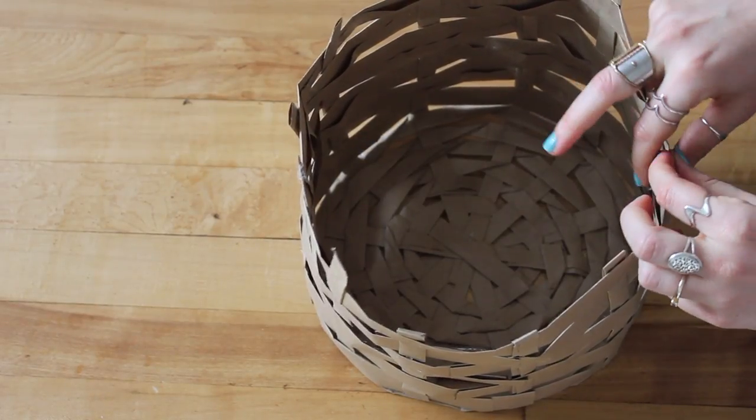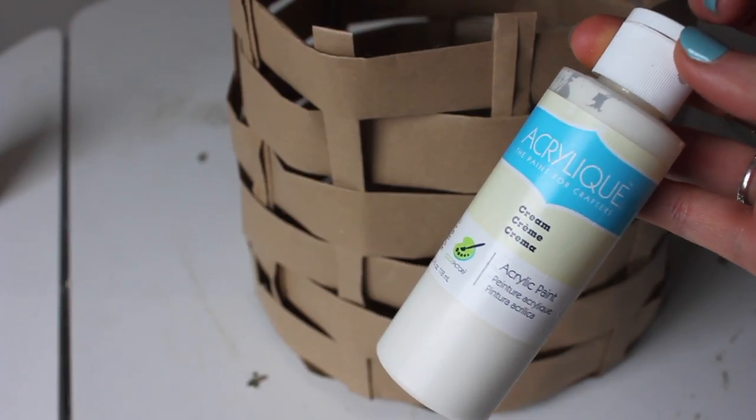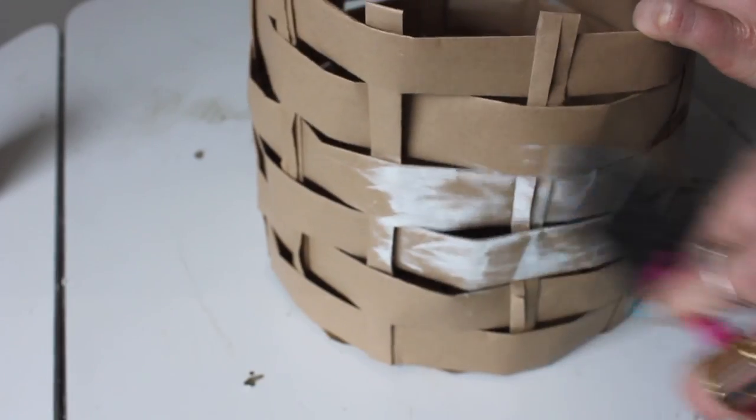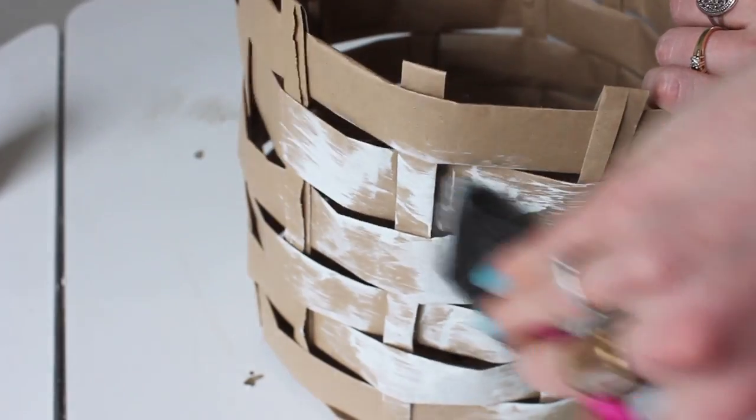Now this last step is optional. I wanted to paint it white to go along with my decor. So this is just cheap acrylic paint from the dollar store and a sponge brush, and it kind of gave it a rough-looking paint job to mimic wicker.